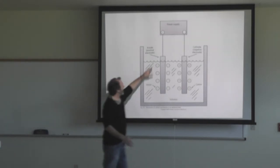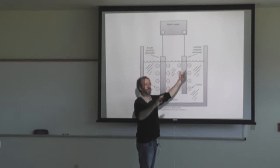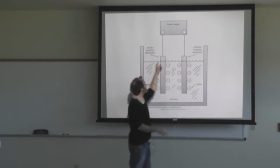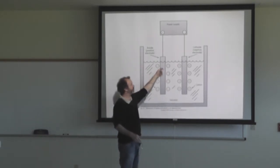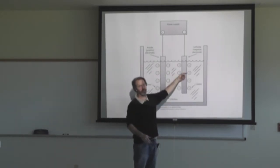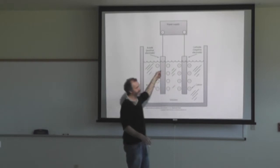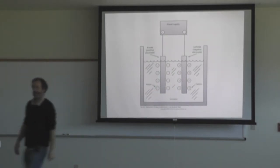Remember not to get the anode and the cathode confused. The anode is where the anions migrate to; cathode is where the cations migrate to. So the anode is positively charged.